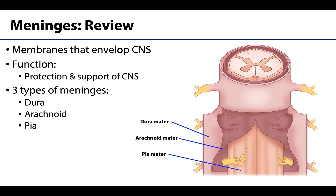Recall that the meninges are membranous coverings of the central nervous system, including both the brain as well as the spinal cord. A lot of the illustrations we have are going to be of the spinal cord because sometimes it's easier to conceptualize there, even though the focus of this particular video will be on the meninges of the brain. The major function of the meninges is to protect and support both the brain and the spinal cord, but also the meninges will form a supporting framework for dural venous sinuses, veins, and arteries, in addition to enclosing that fluid-filled subarachnoid space, which is really vital to normal CNS function.